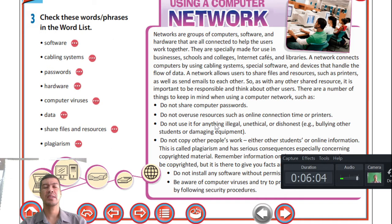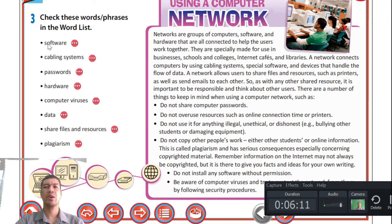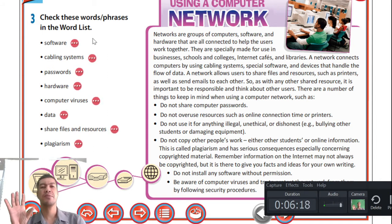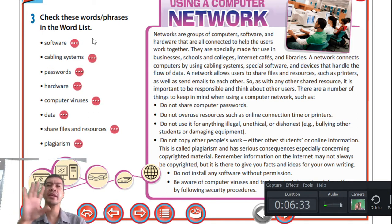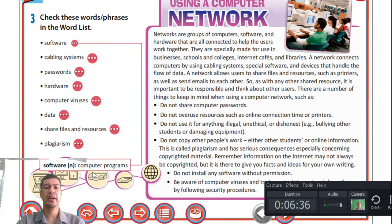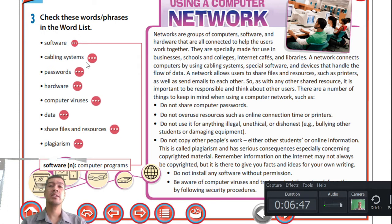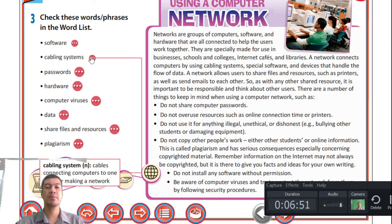Let's check the word list. Software: whatever you see on your PC screen is software — you cannot operate a cell phone, iPad, or laptop without software. These are your computer programs. Cabling systems: these are the physical systems you can see and touch — cables connecting computers to one another to make a network.